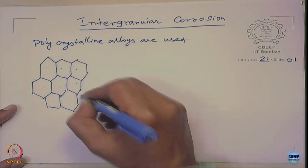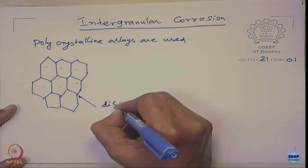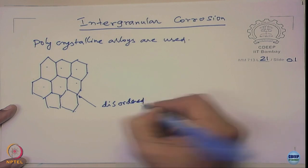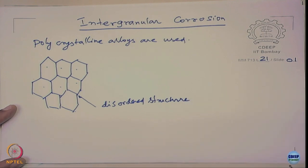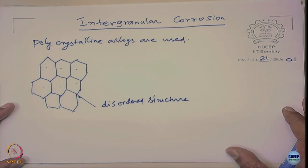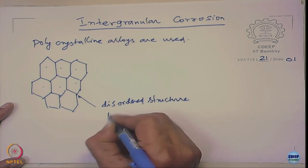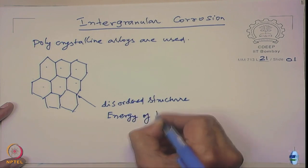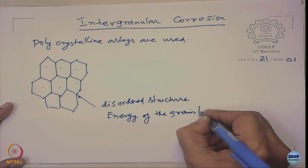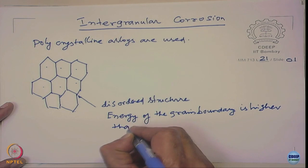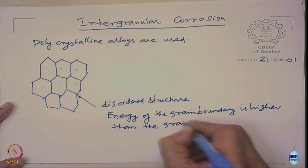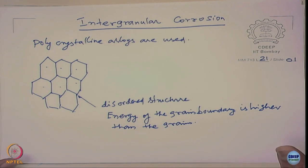What happens in that case? You will have a disordered arrangement of atoms at the grain boundary. This means the energy of the grain boundary is higher than the grains — the atoms at the grain boundary are at a higher energy state compared to similar atoms located within the grains.